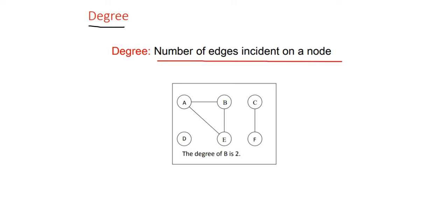The degree of a vertex is the number of edges incident on that node. As shown in the figure, vertex A has two lines — one to B and one to C — so the degree of A is 2. Similarly, the degree of B is 2. Vertex C has only one edge, so its degree is 1. Vertex F also has degree 1. Vertex D has no edges, so its degree is 0; it is also called an isolated vertex or null graph.